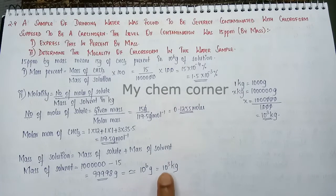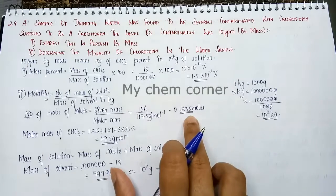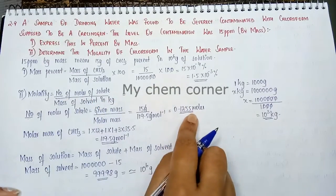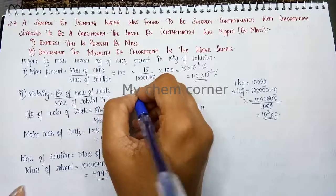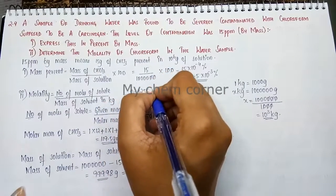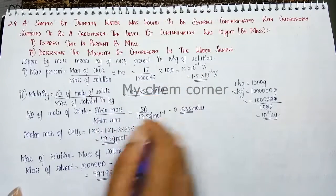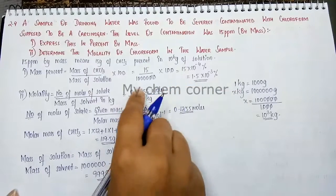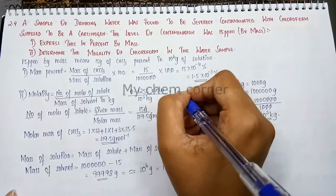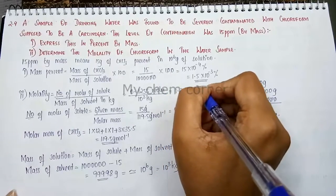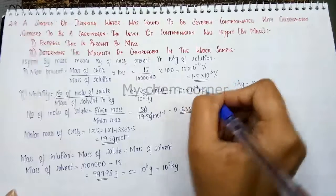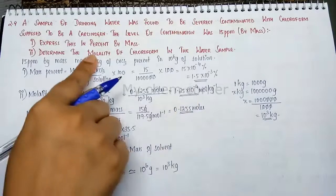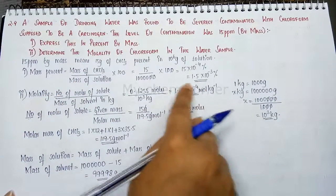Now let's substitute into the molality formula. Number of moles of solute is 0.1255 moles, and mass of solvent in kg is 10³ kg. Dividing: 0.1255 ÷ 10³ = 1.25 × 10⁻⁴ mol/kg. That is the molality of chloroform. So the first answer is 1.5 × 10⁻³ % and the second is 1.25 × 10⁻⁴ mol/kg.